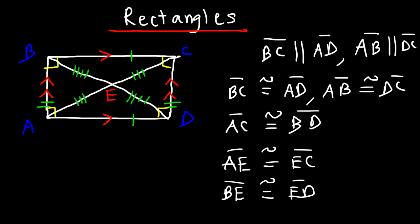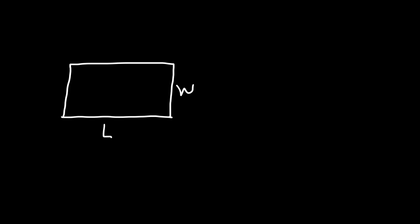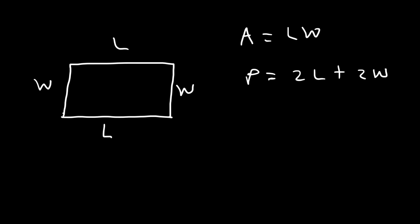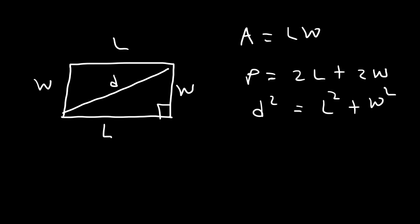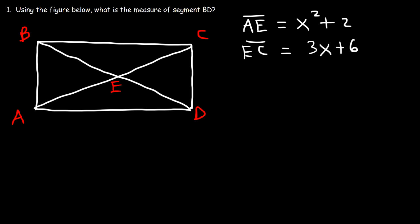Here are some key formulas for rectangles. If L is the length and W is the width, the area equals length times width. The perimeter is the sum of all four sides: 2L plus 2W. To calculate the length of the diagonal, use the Pythagorean theorem: D squared equals L squared plus W squared.